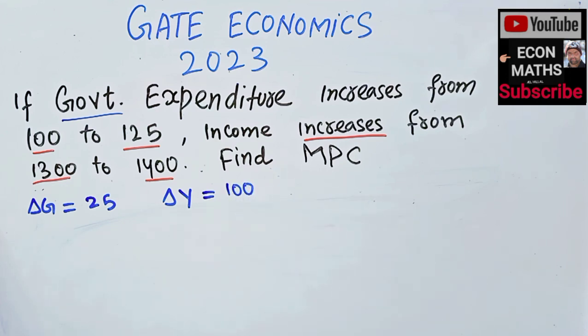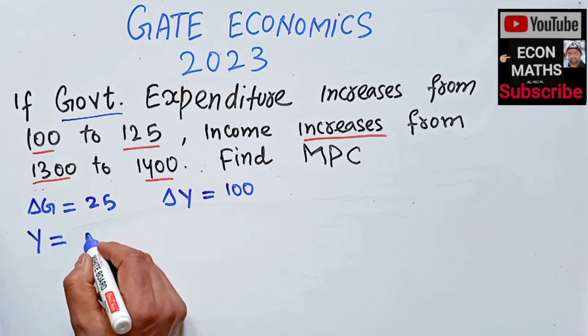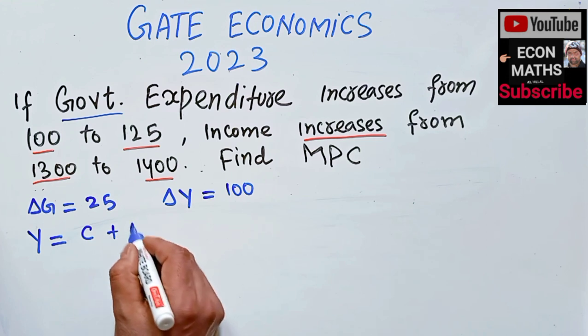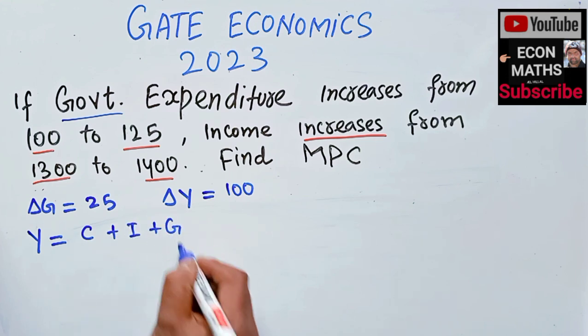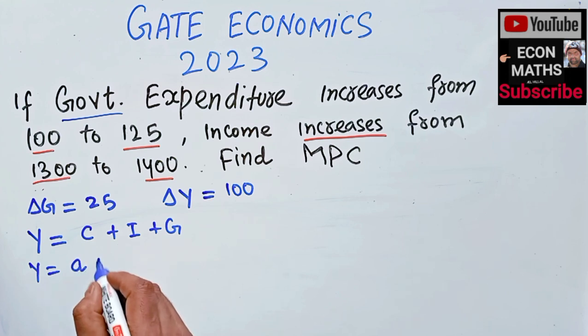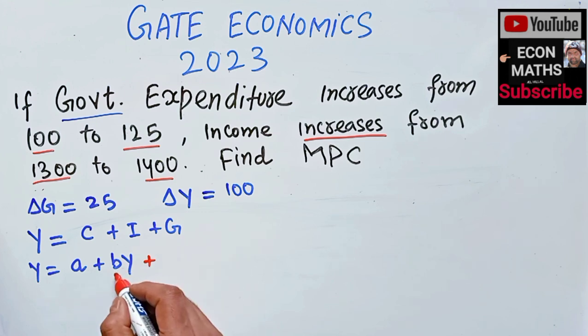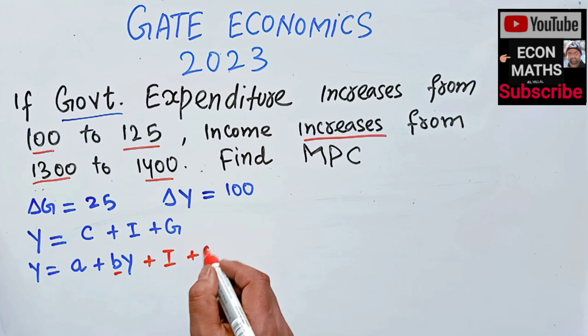Using our identity, total income Y equals C plus I plus G. Y equals A plus BY plus I plus G, where A is autonomous consumption that doesn't depend on income level, B is the marginal propensity to consume that we want to find, investment I is autonomous, and government spending G is also autonomous.